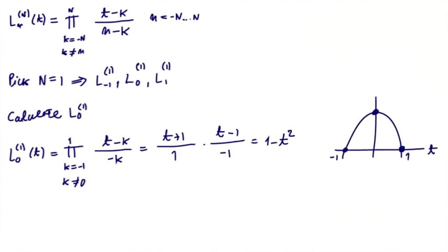For completeness, you can calculate l 1 of 1, which is t squared plus t over 2, and l minus 1 of 1, which is equal to t squared minus t over 2.